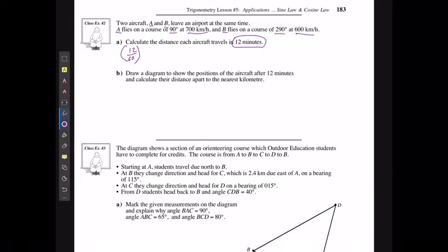I'm going to multiply that by the speed, and let's do it for A first. The speed that A was traveling at was 700 kilometers per hour, which means that aircraft A traveled 140 kilometers. Aircraft B traveled for the same amount of time, 12 over 60 hours, multiplied by the speed of 600 kilometers per hour, and this one wound up traveling 120 kilometers.